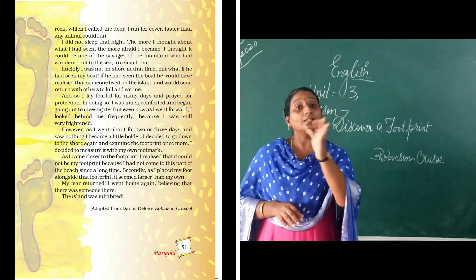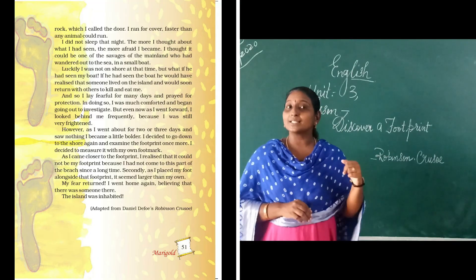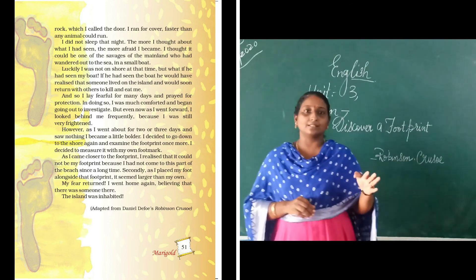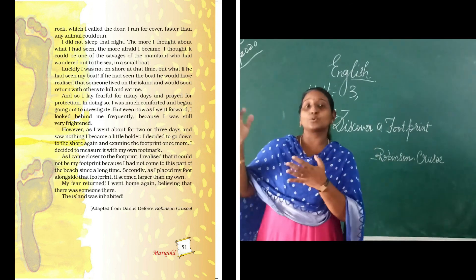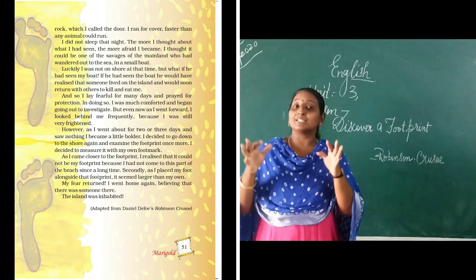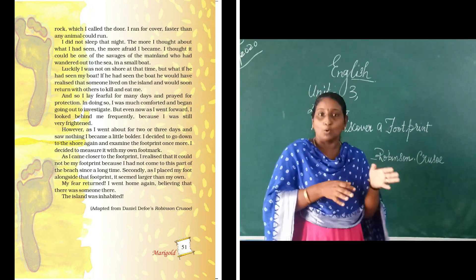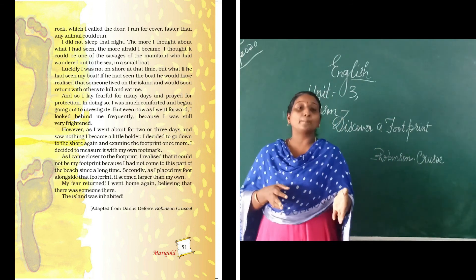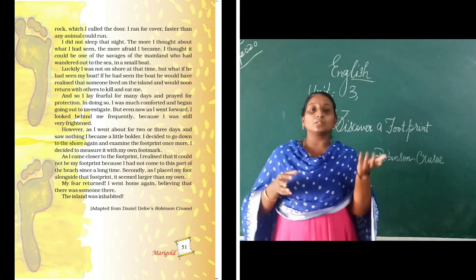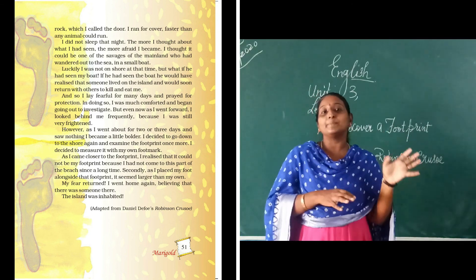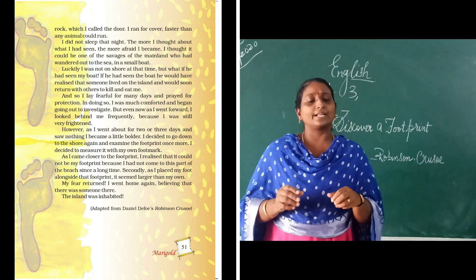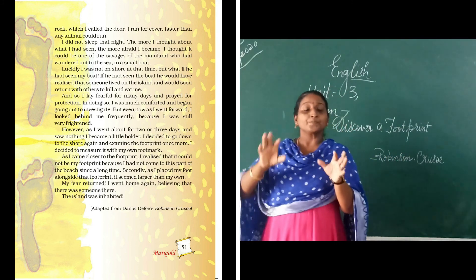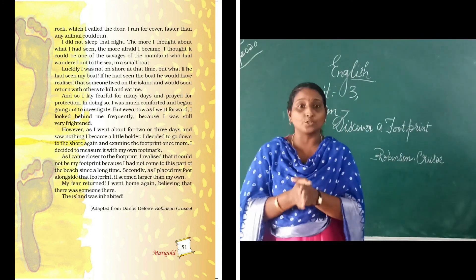Now the second page tells us that he was so frightened that he ran back to his home. That means when he was supposed to go out with his boat for fishing, he was so frightened after seeing the footprints. He thought that someone might be on his island. He was so frightened that he ran very fast back to his cave.